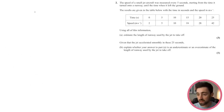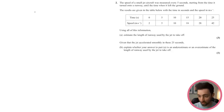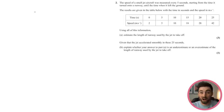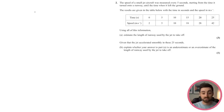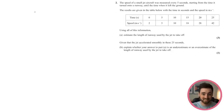Question 2: the speed of a small jet aircraft was measured every 5 seconds from when it turned onto a runway until it left the ground. Using this information, estimate the length of runway used to take off. This is going to be an estimate because we only have the speed at certain 5-second intervals — we have no idea how the jet behaves in between. That's why it's an estimate; we don't have all the data.